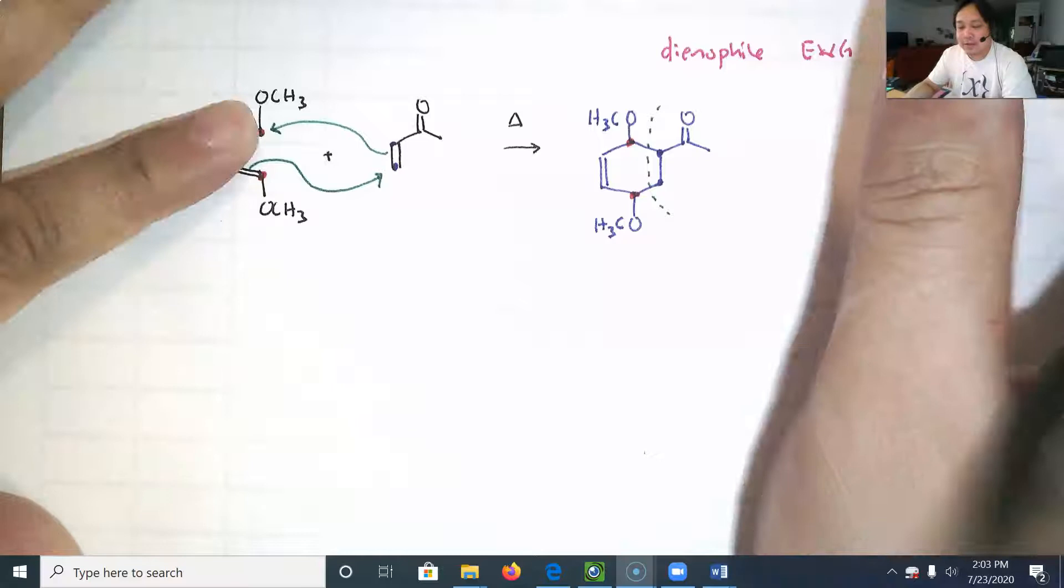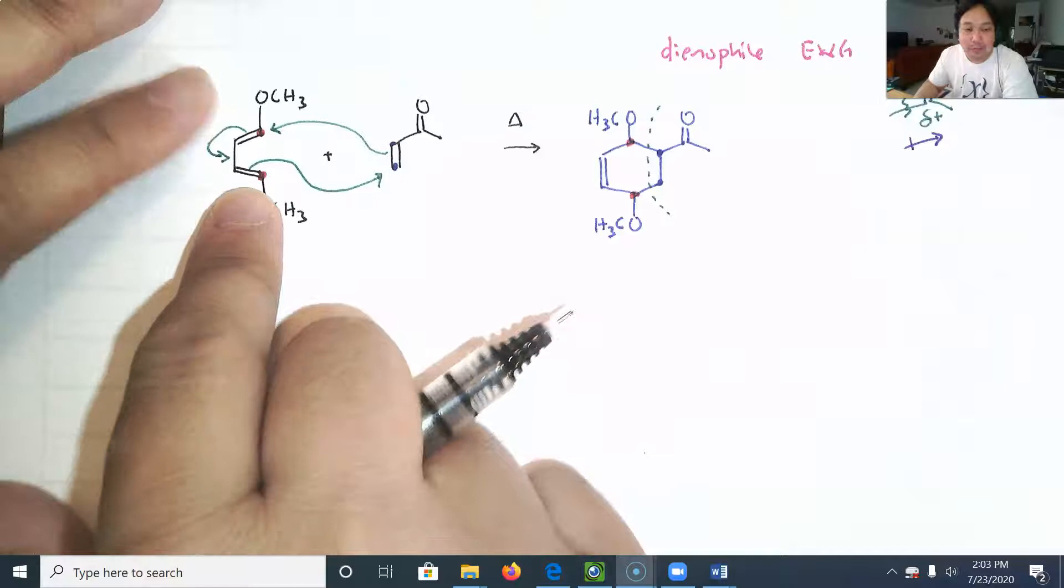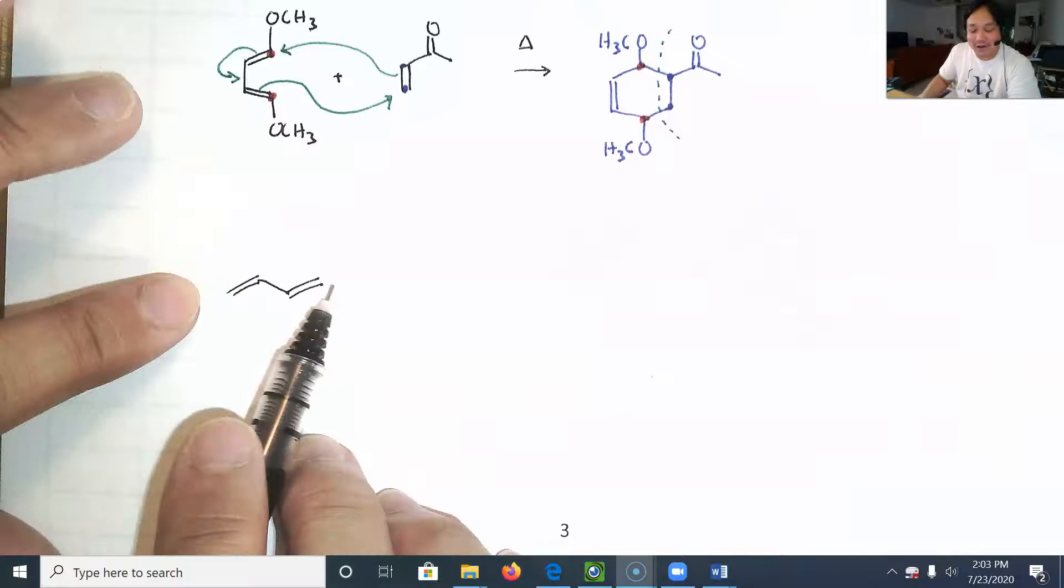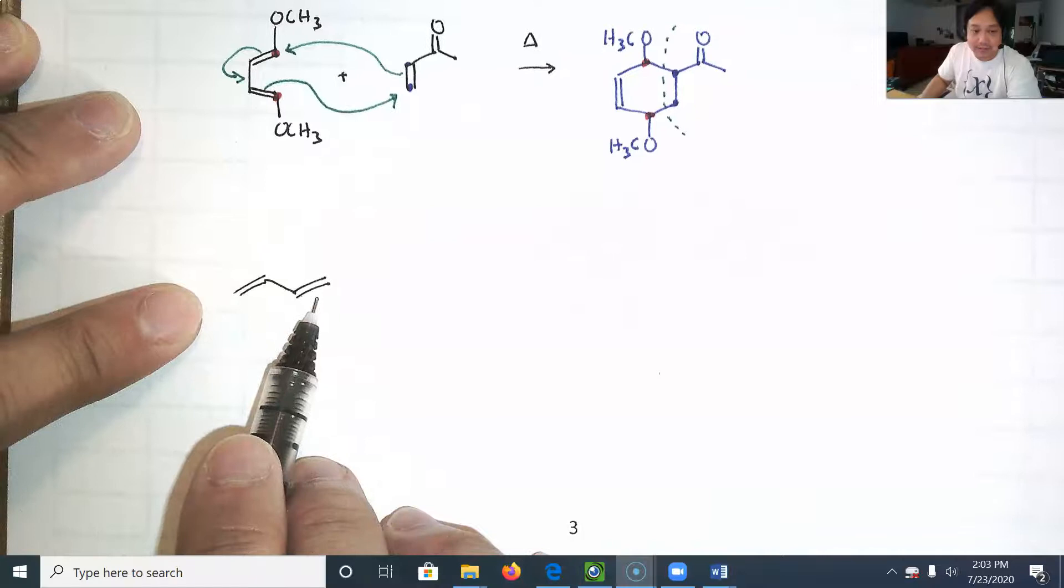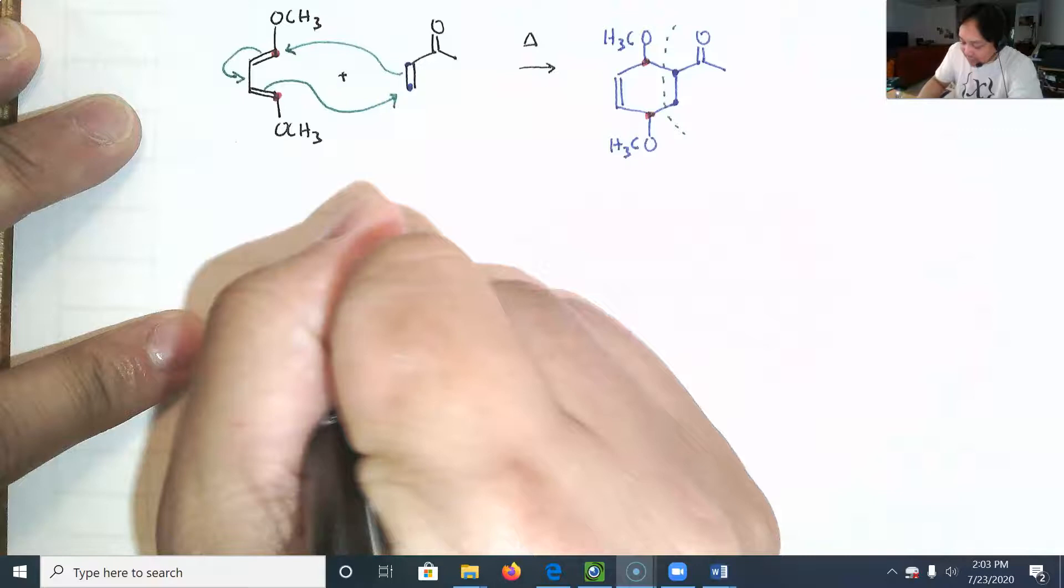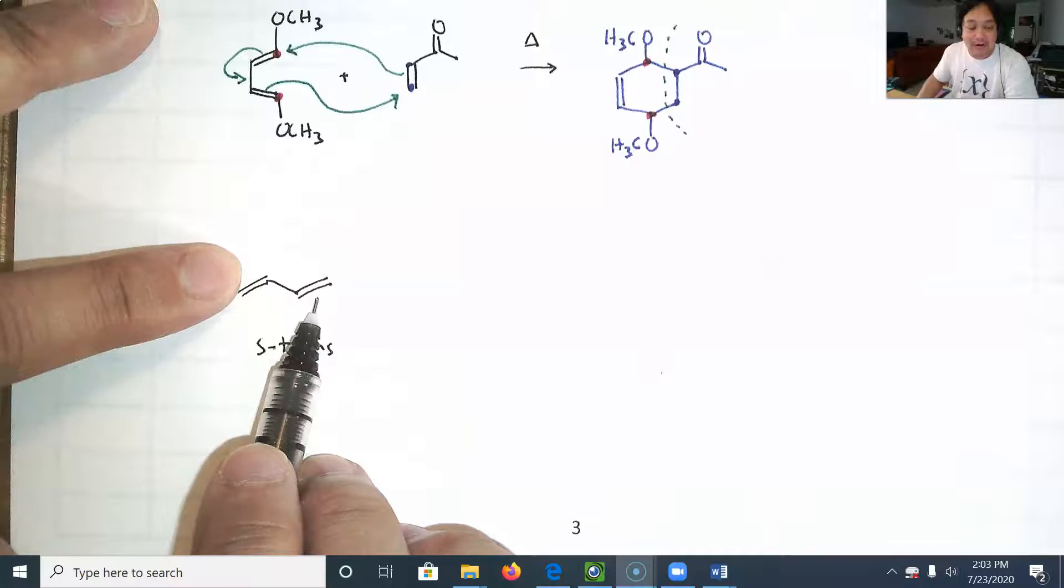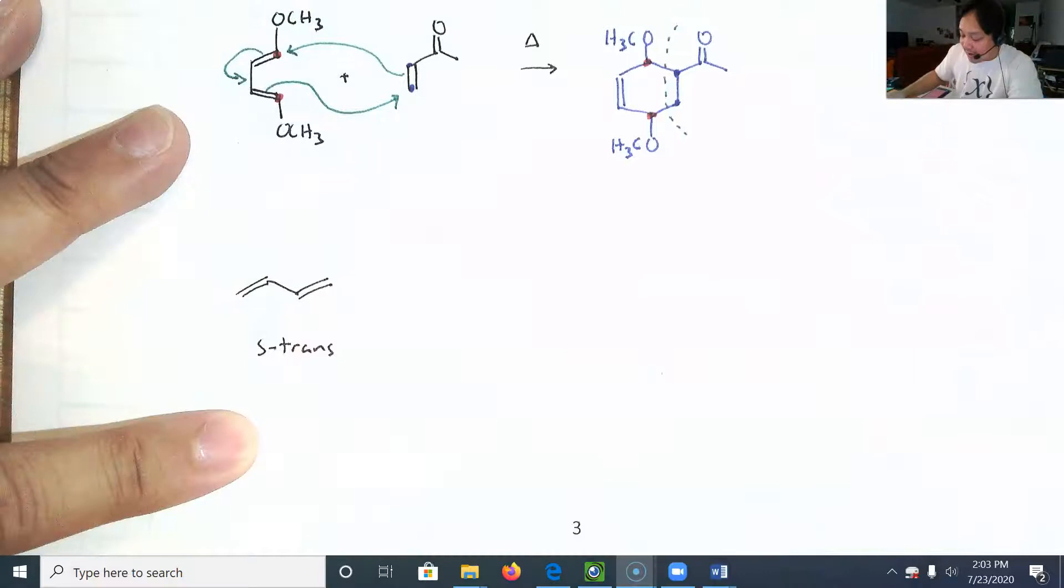I'm not going to draw orbitals. Normally, to explain why this is this conformation, you would draw orbitals. Let me just tell you the names at least. If you have it like this, there's actually no cis and trans because that's not a cis or trans alkene. This is called S-trans. It's not that the groups on each individual double bond are opposite each other; it's telling you that the two double bonds themselves are opposite each other. To do Diels-Alder, you have to have the conformation called S-cis.